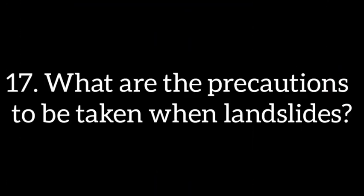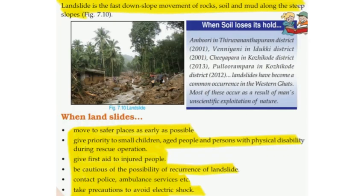What are the precautions to be taken when landslides occur? What is a landslide? A landslide is the fast downslope movement of rock, soil and mud along steep slopes.